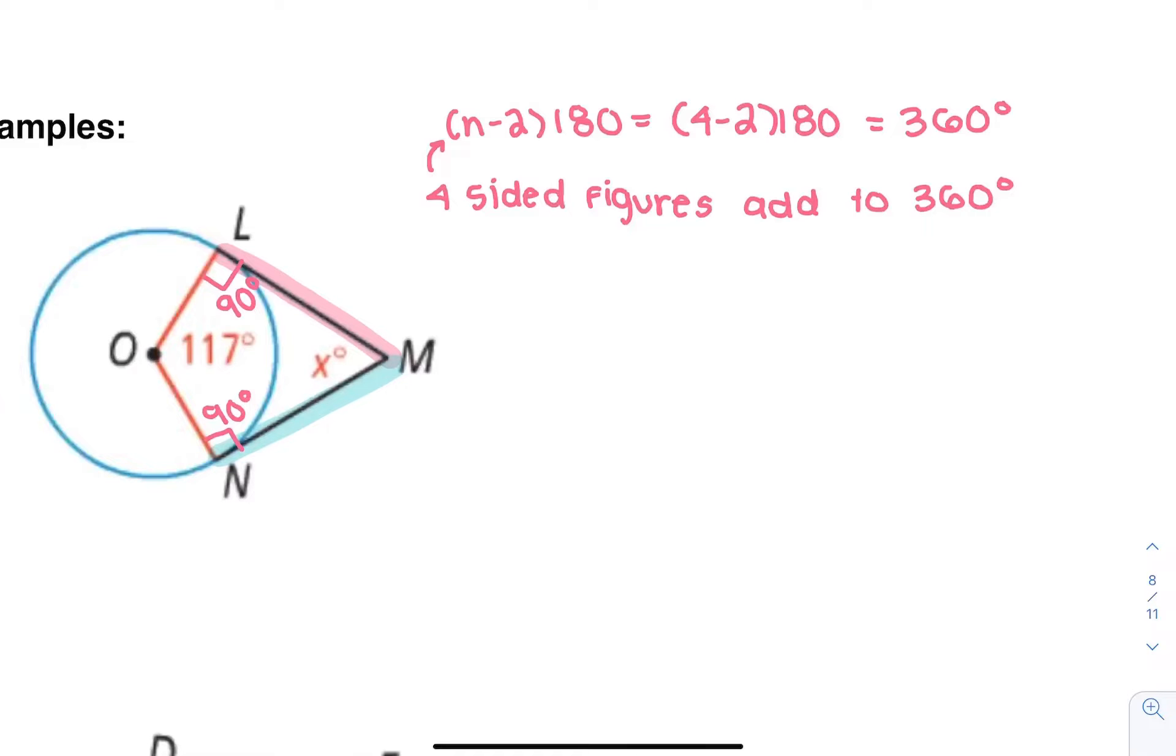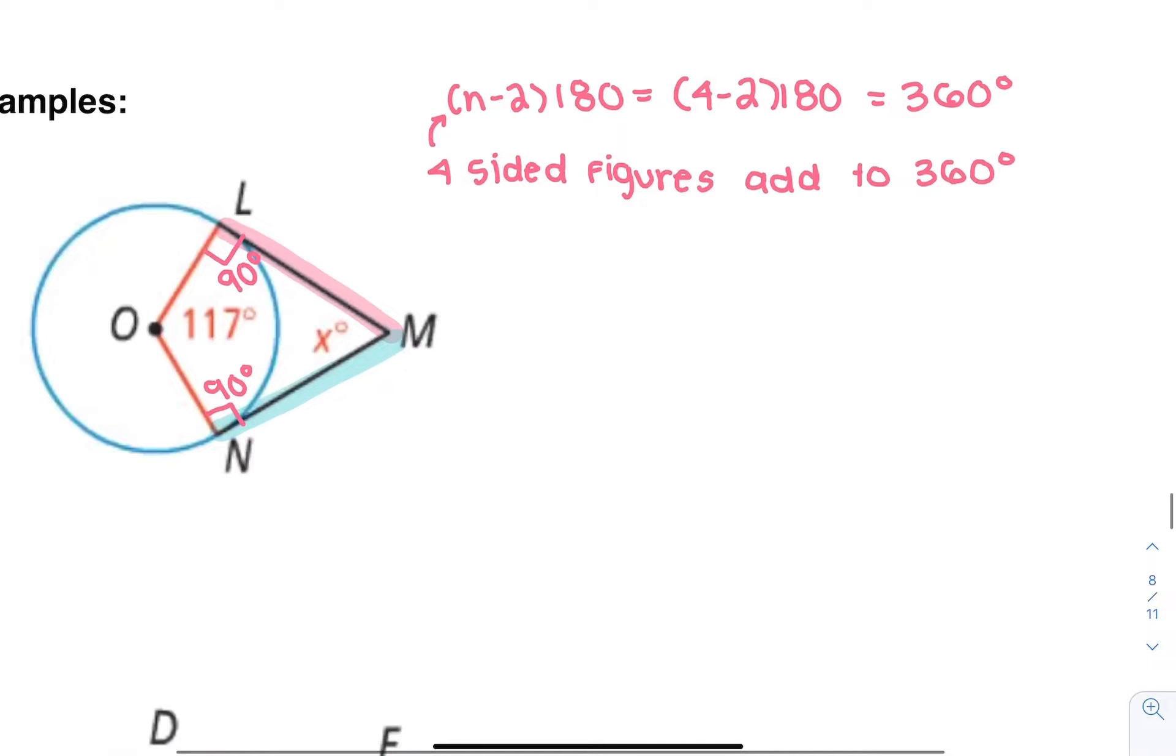If it adds to 360, add them up. 117 plus 90 plus 90 plus X equals 360, which is 297 plus X equals 360. That means X is 63 degrees. First we used the 90-degree thing with the tangent lines, and then we applied our knowledge back to what we learned about polygons.